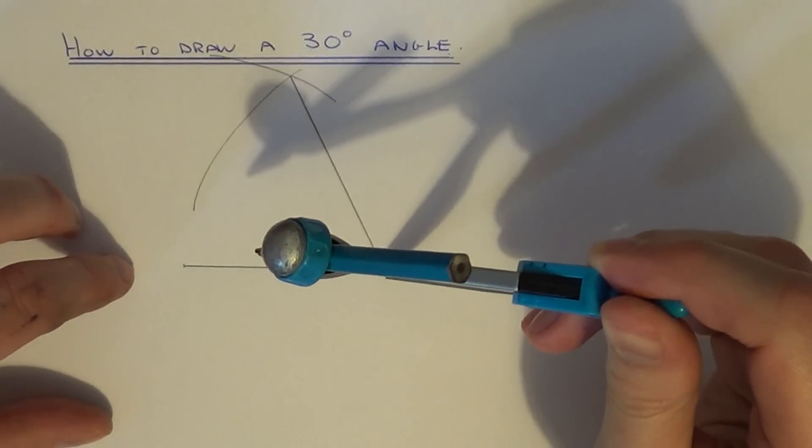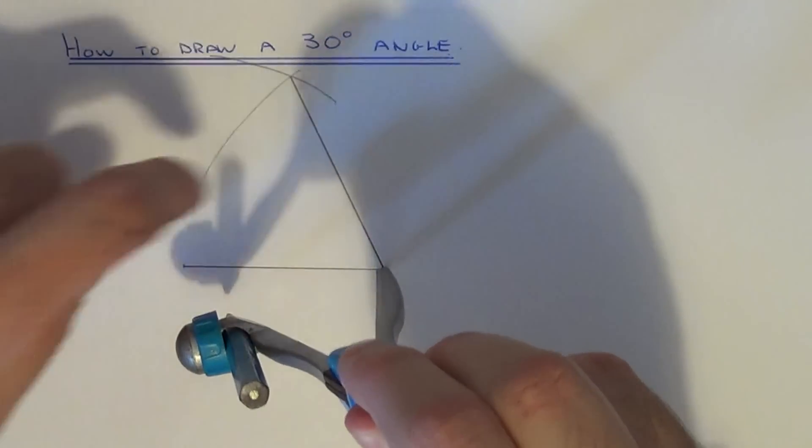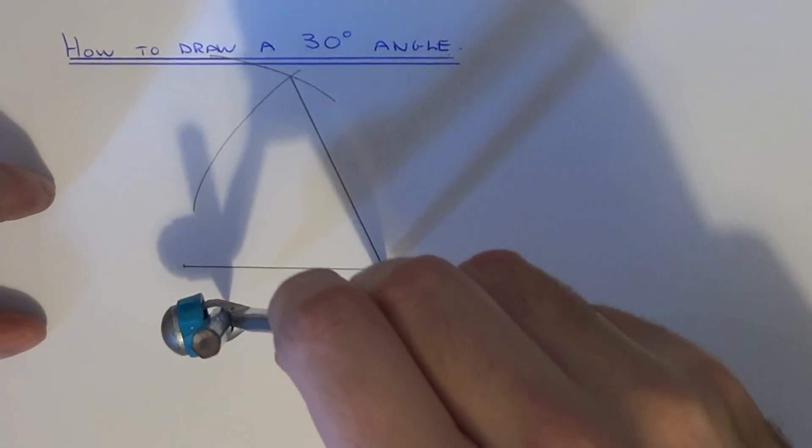So if you put your compass point on the right hand side of the line, we need to do an arc which passes across the two lines which we already have.